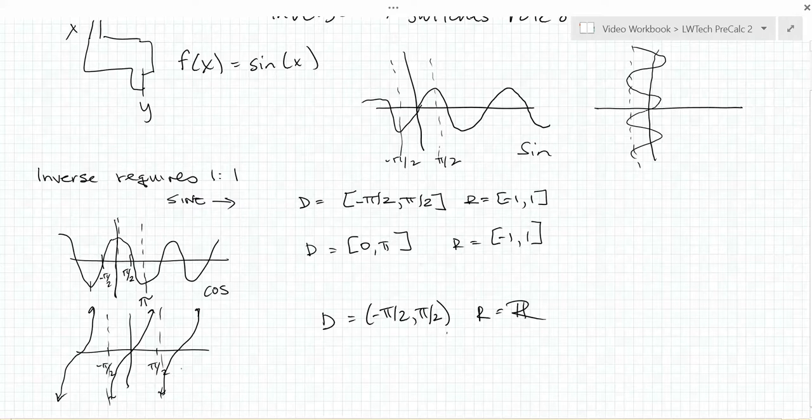We're not going to worry about secant, cosecant, or cotangent. It's actually easier just to rewrite those functions in terms of sine, cosine, and tangent, and then work with their reciprocal versions.